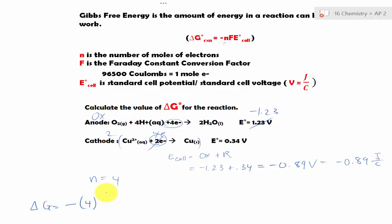We have ΔG equal to negative. N is equal to 4. Times by the Faraday constant, 96,500 coulomb over 1 mole of electron.